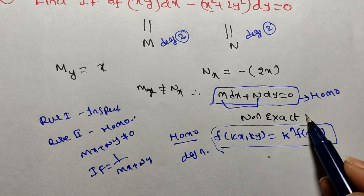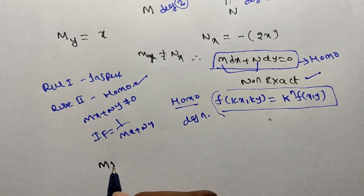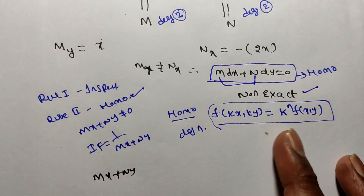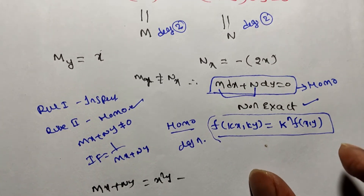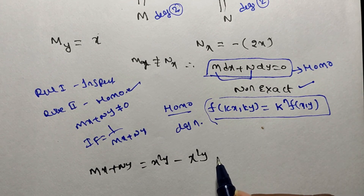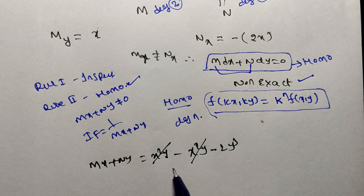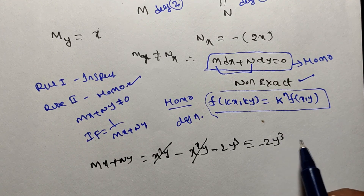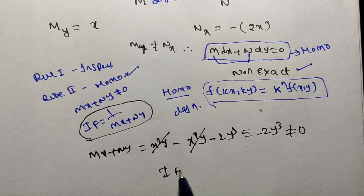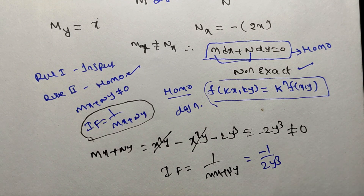Since it is non-exact and homogeneous, we verify mx plus ny. Multiplying x to M gives x squared y. Multiplying y to N: minus (x squared plus 2y squared) times y gives minus x squared y minus 2y cubed. The terms positive x squared y and minus x squared y cancel, leaving minus 2y cubed. This is not equal to zero, so mx plus ny equals minus 2y cubed and the integrating factor is minus 1 by 2y cubed.